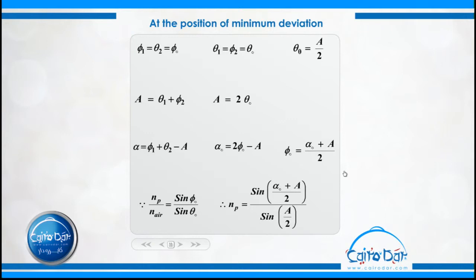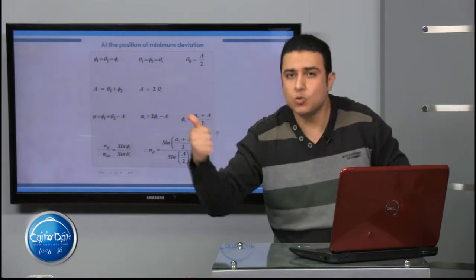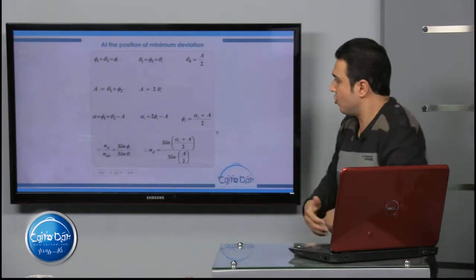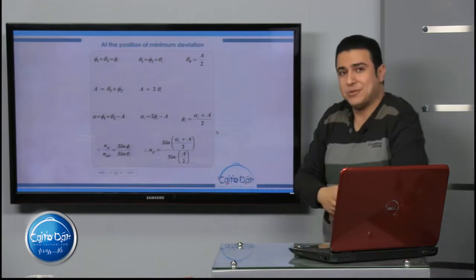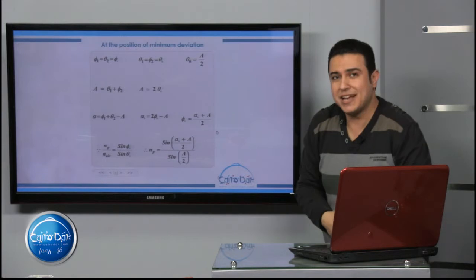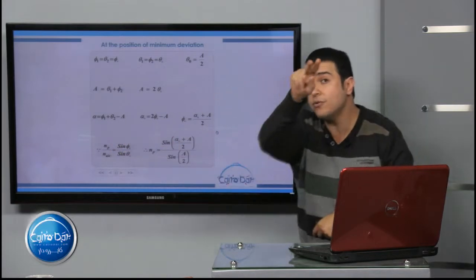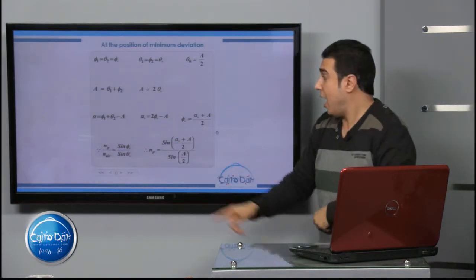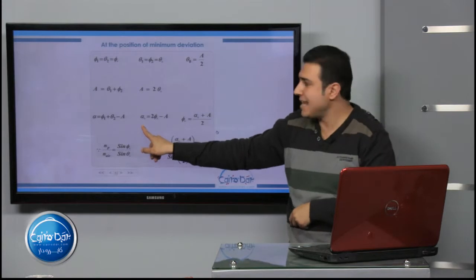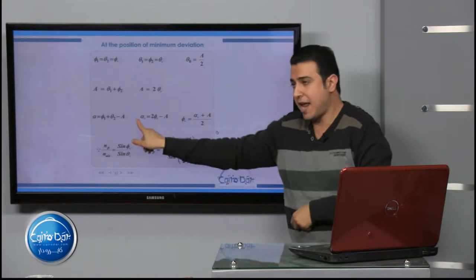Also, from the equation alpha = φ₁ + θ₂ − A, substituting φ₁ = φ₀ and θ₂ = φ₀, we get α₀ = 2φ₀ − A, and therefore φ₀ = (α₀ + A) / 2.